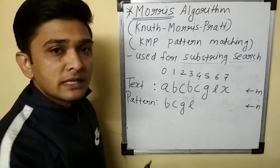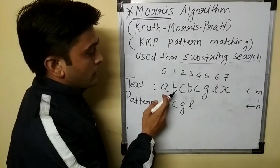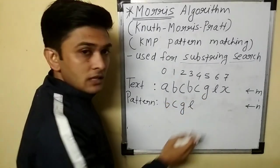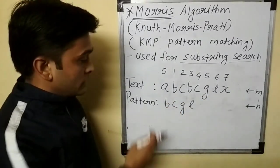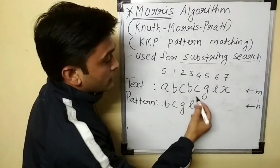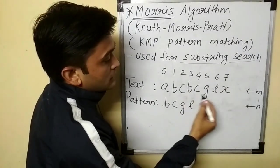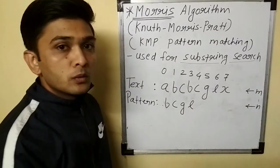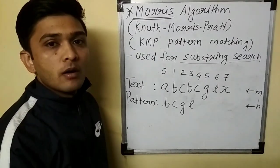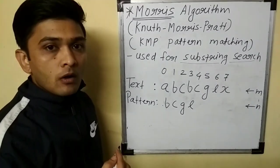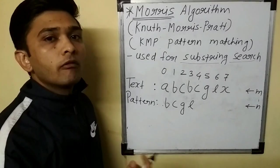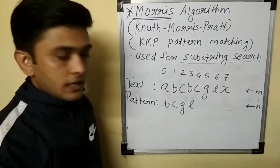Let's see one example. The text is ABCBCGLX and the pattern which we want to find out is BCGL. You can see this particular pattern BCGL is present in the text. We are going to see how we can do this with Morris algorithm. First we will start with the usual way, and then we will move to Morris algorithm.